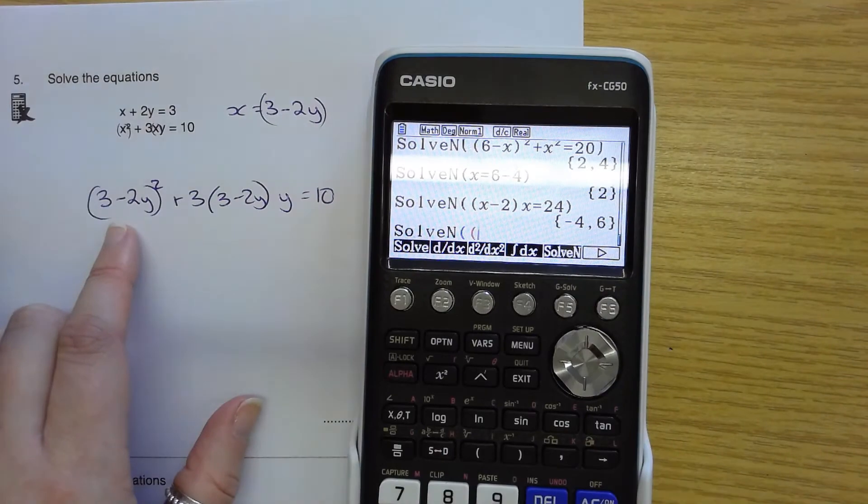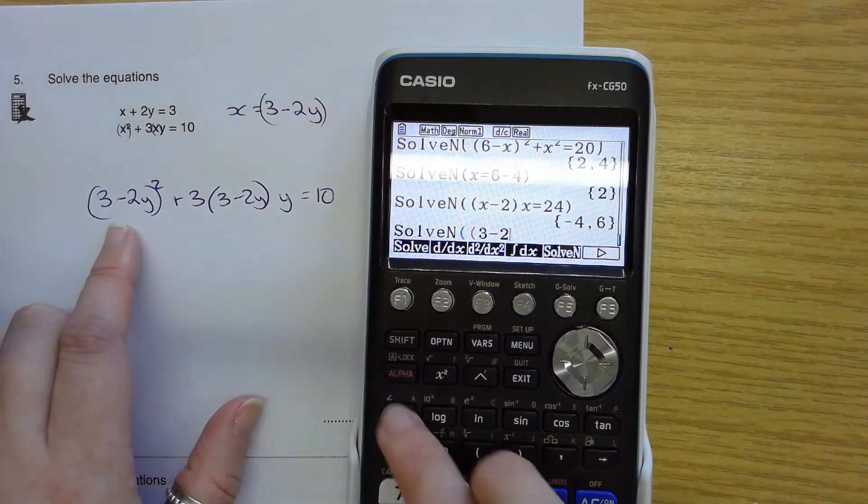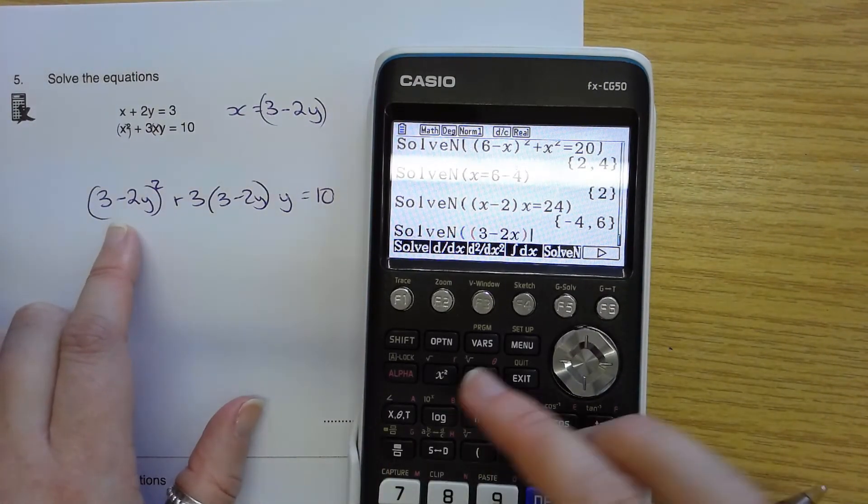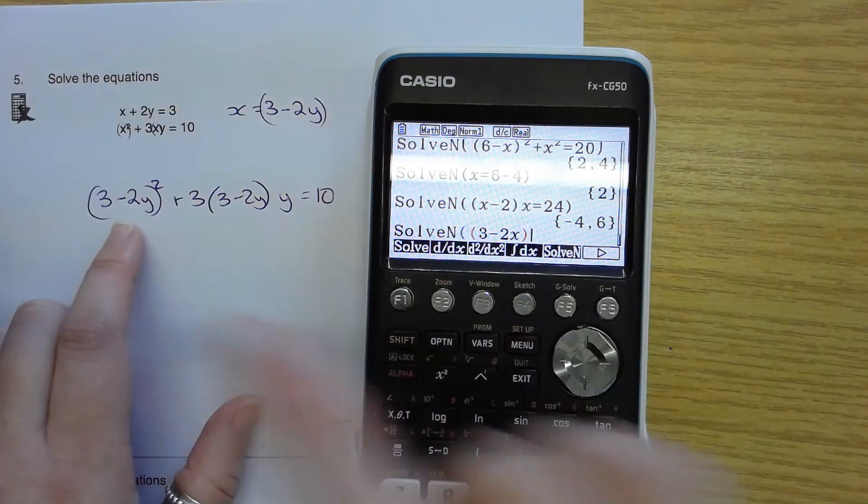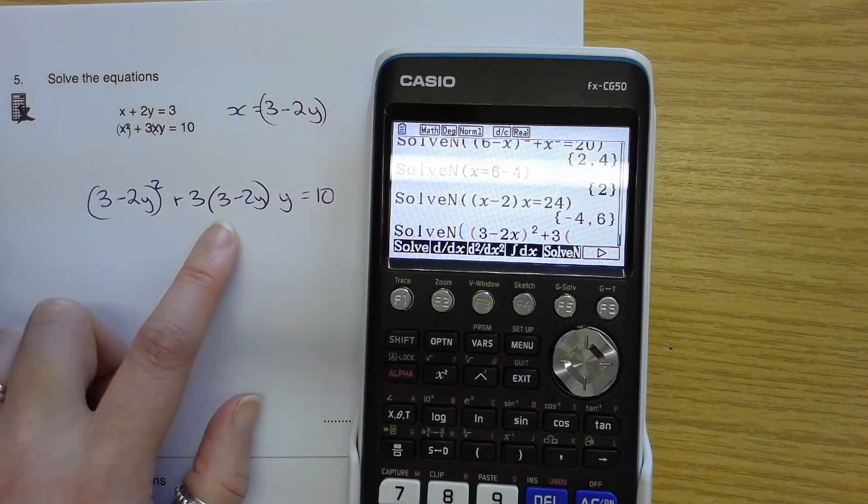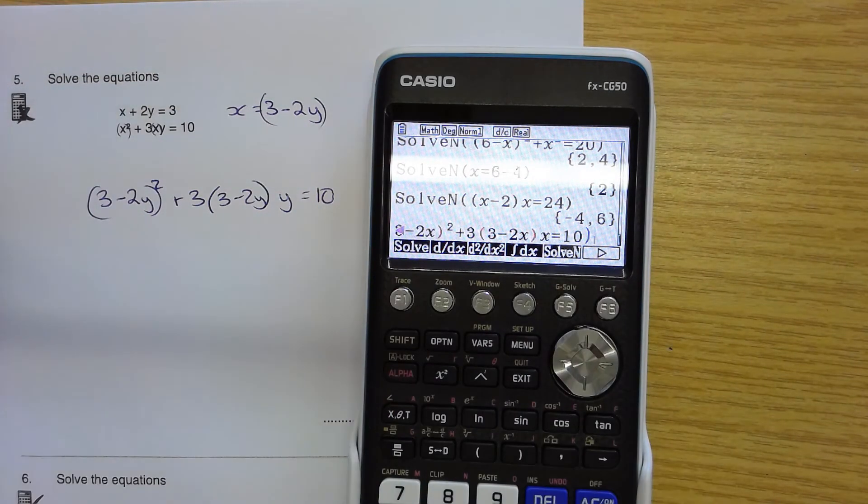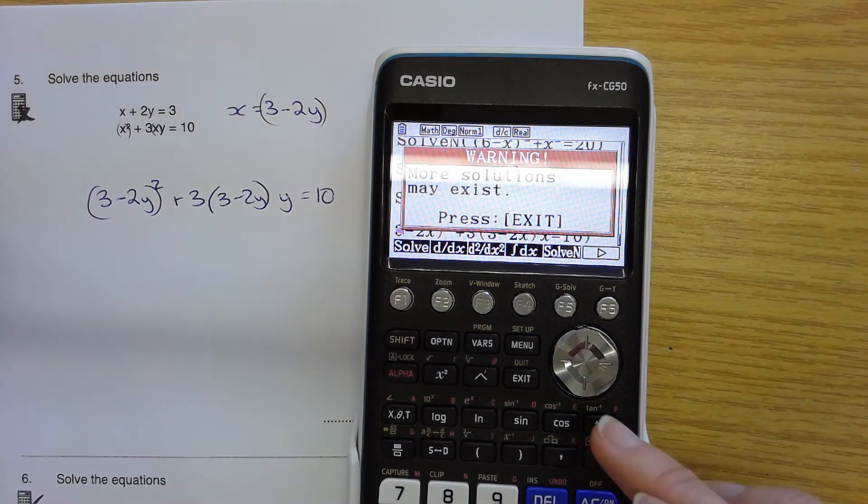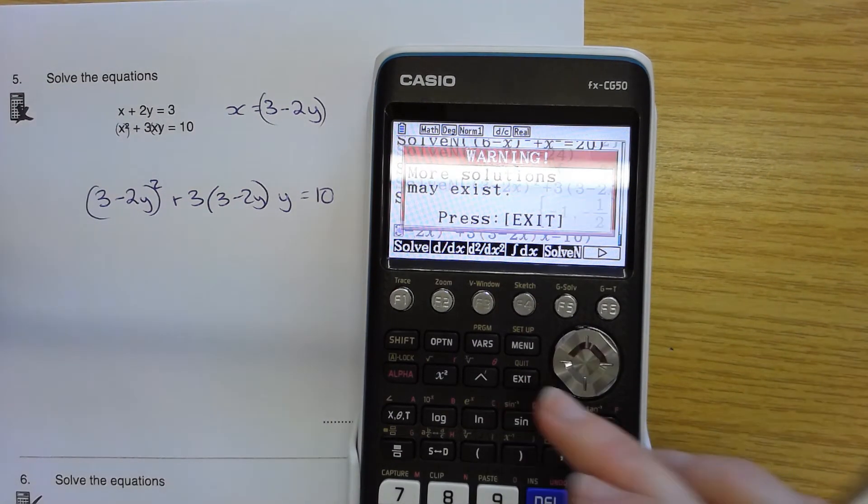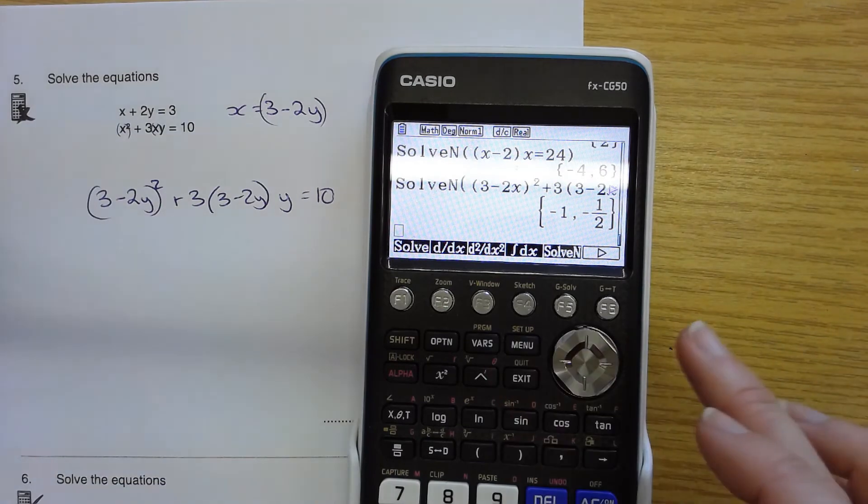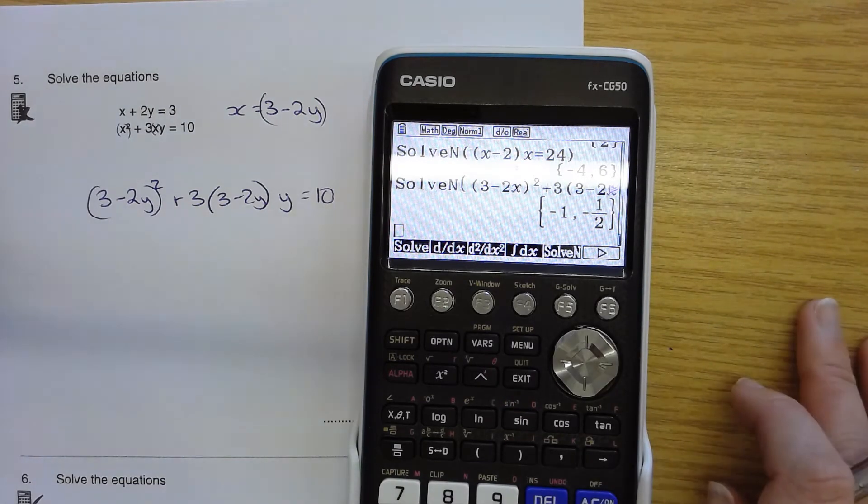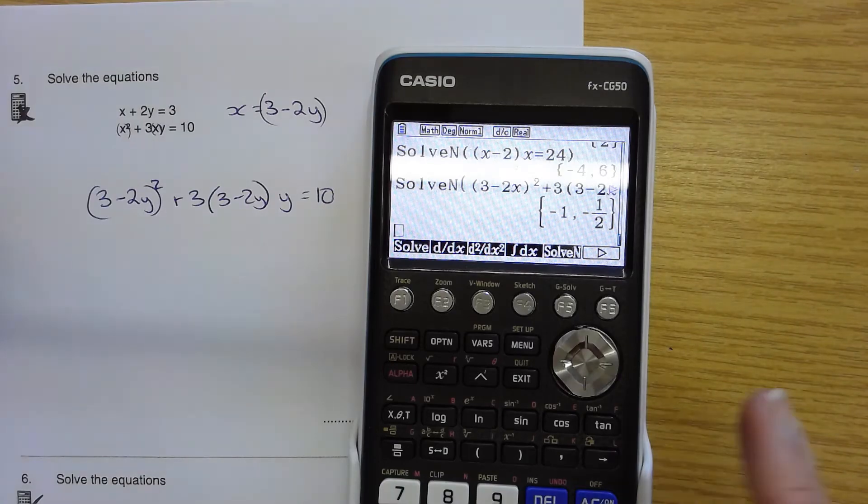Just to show you again, your solve N would simply be open bracket (3 - 2y) be careful because I'm using x here and that's y, squared plus 3 bracket (3 - 2y) close bracket y again shift equals 10. Close bracket. Make sure that I open and close with my blue brackets. All done. Exit. My answers are negative 1 and negative 1 half as my first solution. So those are my 2 y values to substitute in and then find the corresponding x values.